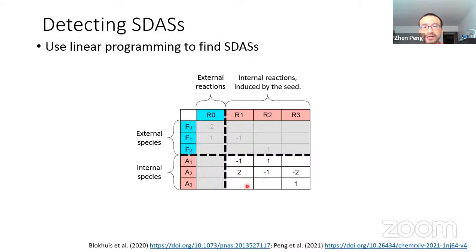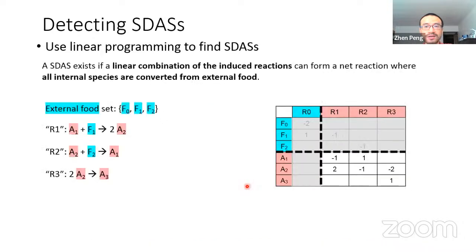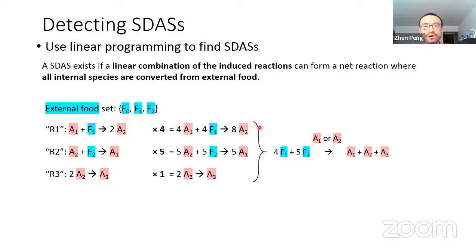Not all internal species are necessarily autocatalysts — even if there is a SIDAS, there could also be some waste or side products. To find a SIDAS, we want to combine these reduced reactions such that all internal species can be produced by consuming external food. In this specific case, combining four R1s, five R2s, and one R3, we get a net reaction where F1 and F2 react to generate A1, A2, and A3, with A1 or A2 provided as the seeds. Whether such linear combinations exist can be calculated by linear programming. Now we have a method that detects SIDAS.